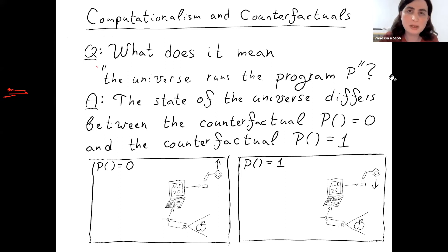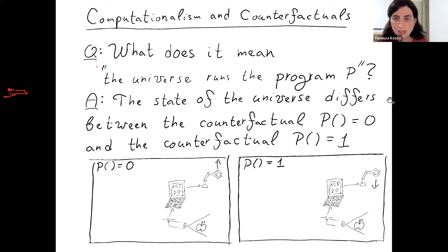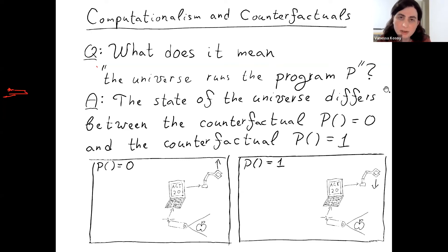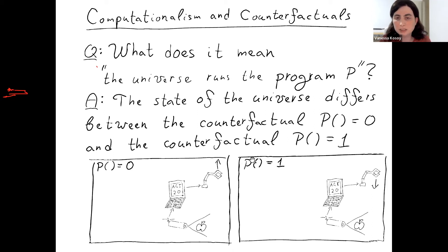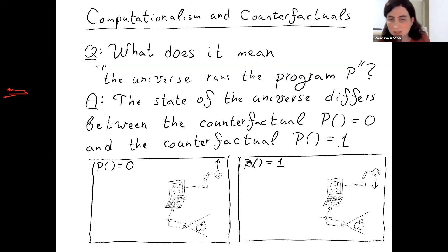Information physicalism allows us to define which programs are running in the universe — an important building block. Given a program whose output is 0 or 1, we consider two logical counterfactuals: one where this program outputs 0, and one where it outputs 1. We look at what the physical state of the universe is like in those two counterfactuals. If the states are distinct, the program is definitely running; if not distinct, it doesn't run — or more precisely, we have 50/50 uncertainty. There's also an in-between case with overlapping probability distributions.